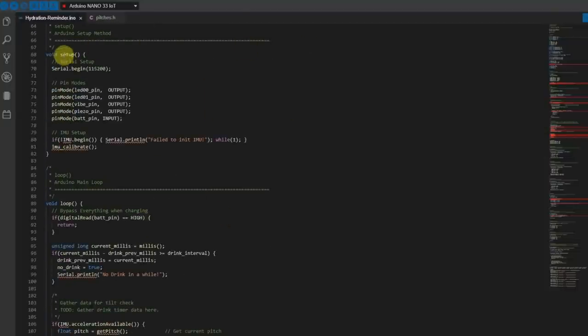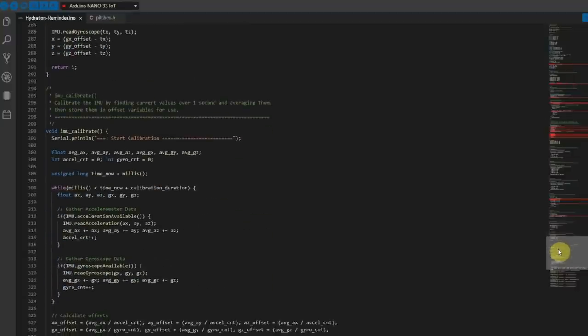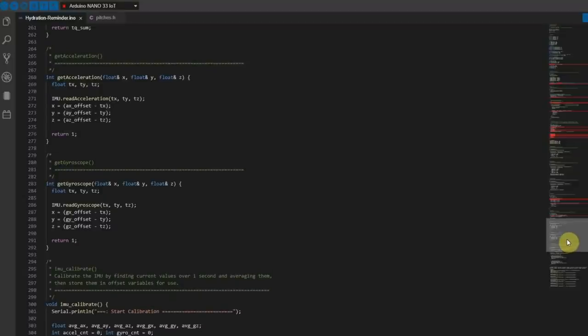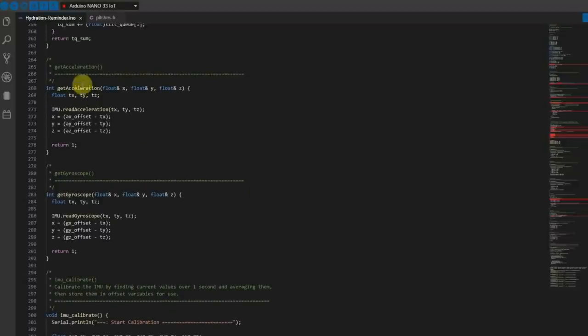Down in the setup, pretty basic stuff. Get some serial, set up all of our pin modes, and set up the IMU. And I wrote a little calibration function, which I'll show you down here. And what this does is it reads for one second all of the data from accelerometer and the gyroscope. Averages everything out, stores it into some global variables, and then instead of calling the IMU directly, I wrote these functions, which is get acceleration and get gyroscope, which does read it directly, applies the offsets, and then returns those. Basically have a zero point from wherever the unit was turned on. So when it's on the bottle in its vertical position, that's its new zero.